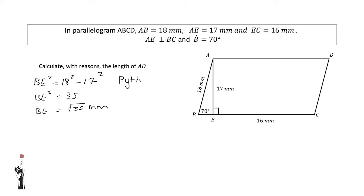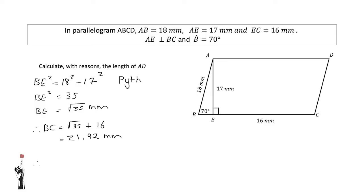Now that I have the length of BE, I can find the length of BC. BC will be equal to the square root of 35 plus 16 mm, which equals 21.916... I am allowed to round this off to two decimal places, and therefore BC equals 21.92 mm. Since BC is 21.92 mm, AD — which is equal to BC — will also be 21.92 mm. Reason: opposite sides of a parallelogram are equal.